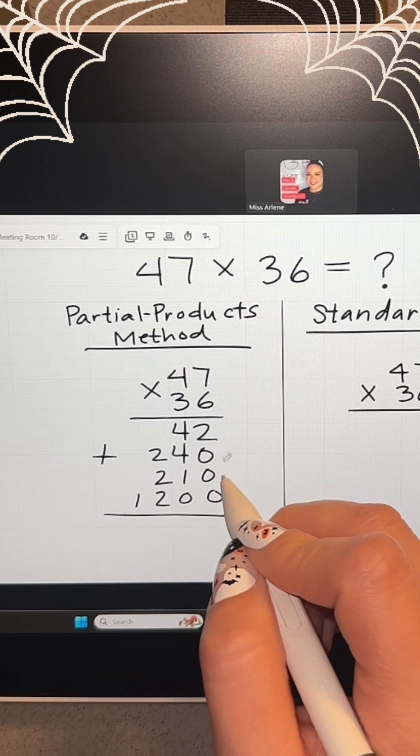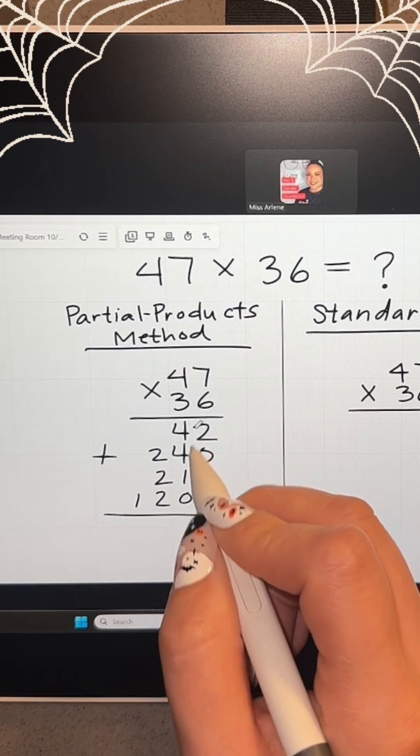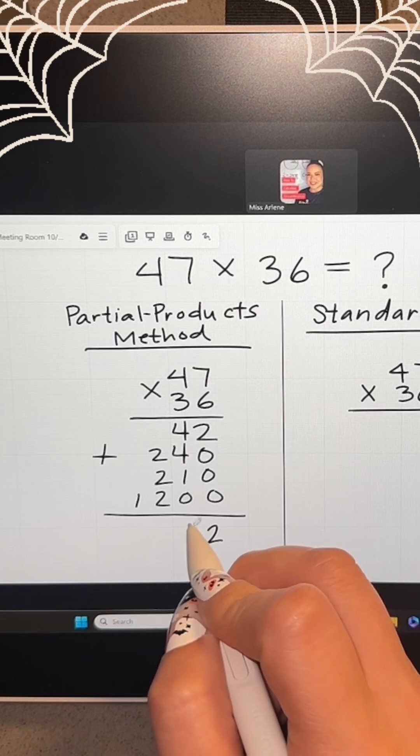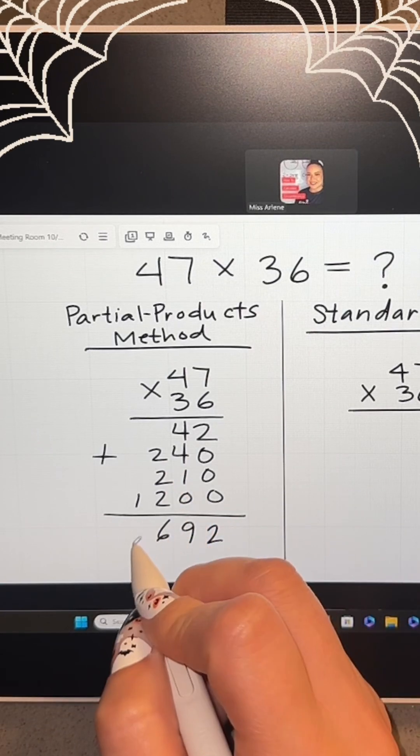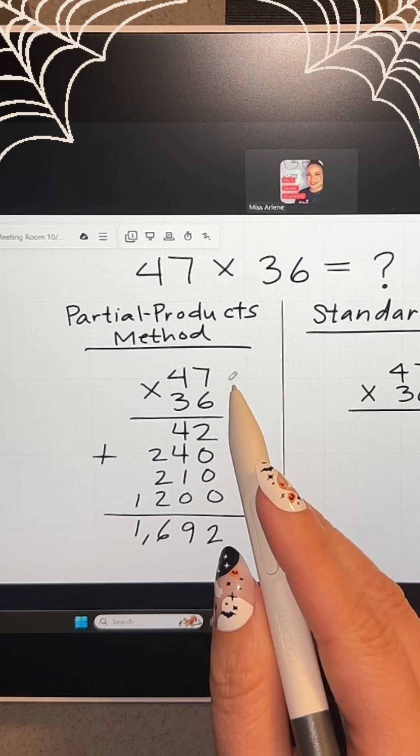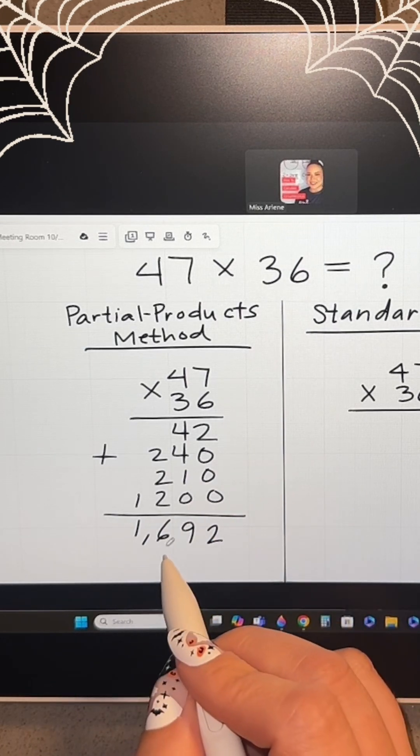Now you're going to add 2 plus 0 plus 0 plus 0 is 2. 4 plus 4 plus 1 plus 0 is 9. 2 plus 2 plus 2 is 6. And you're going to drop down that one. So 47 times 36 is 1,692.